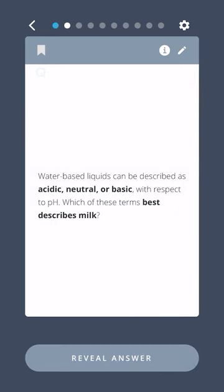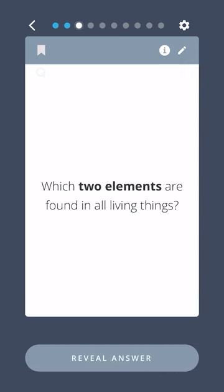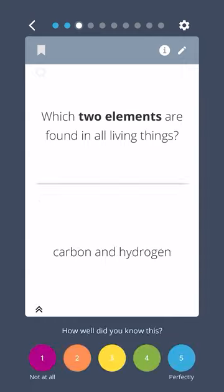Water-based liquids can be described as acidic, neutral, or basic with respect to pH. Which of these terms best describes milk? Acidic. Which two elements are found in all living things? Carbon and hydrogen.